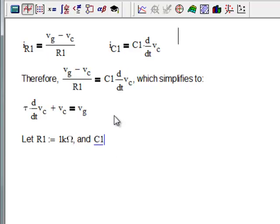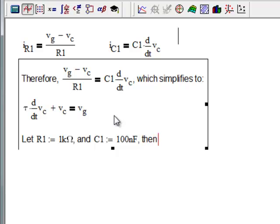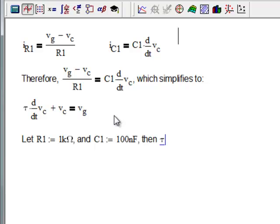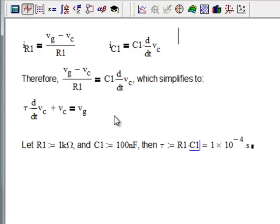Control shift A, C1, colon, equal 100 nanofarad, right arrow key. Then, control, shift A, tau, is equal to R1 times C1, equal sign.